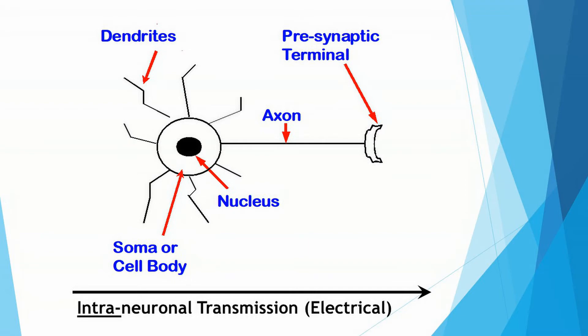Beginning at the bottom of the screen, I've drawn a long black arrow to show the direction of intra-neuronal transmission. Intra means within, and so here, neuronal transmission, the direction of a signal across a single neuron, is from left to right. Note also that this is an electrical phenomenon.